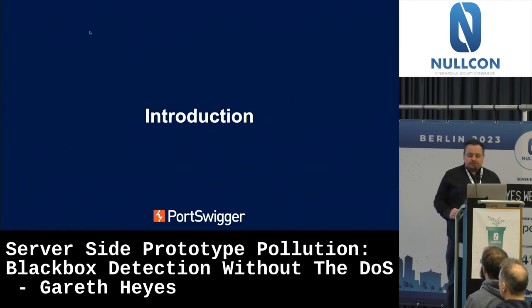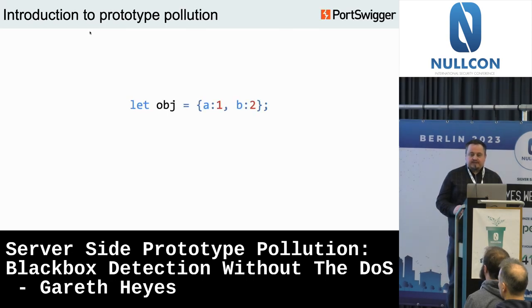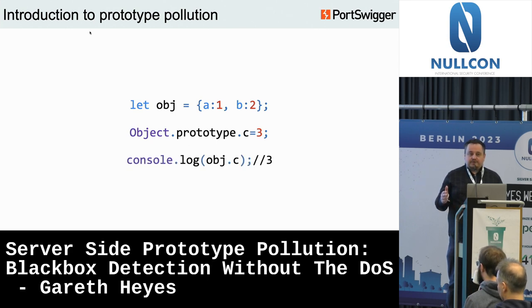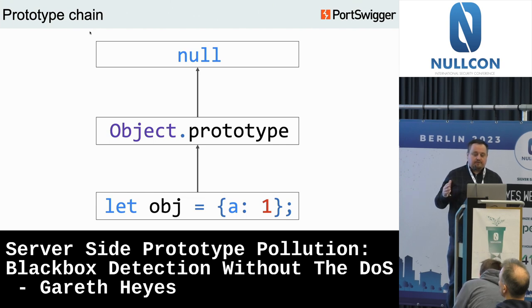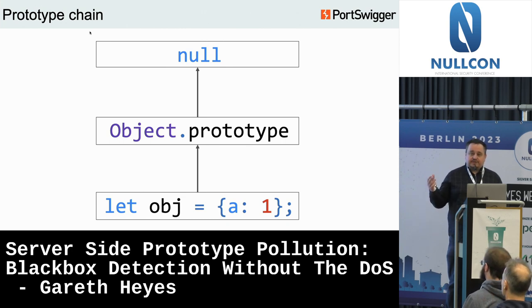A brief introduction to prototypal inheritance. If you have a user-defined object with two properties and you modify the object prototype to add a C property, as long as that user-defined object does not contain that C property, it will inherit from the global object prototype. Almost all objects inherit from the object prototype, and the prototype chain is used to determine what properties an object should have. It goes up the chain until it gets to null.